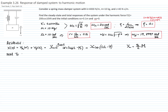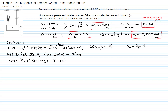To find X0 and the phase angle phi0 from the homogeneous solution, we use the initial conditions. Substituting t equals zero into the total solution, we get: X0 e to the zero times cosine of zero minus phi0, plus X cosine of zero minus phi. This means the initial displacement equals the amplitude X0 cosine of phi0 plus X cosine of phi.